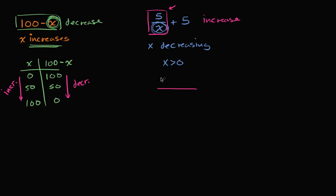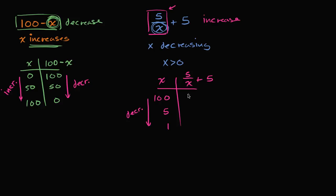We can make a little table to verify that. When x is 100: 5 divided by 100 is 0.05, plus 5 equals 5.05. When x is 5: 5 divided by 5 is 1, plus 5 equals 6. When x is 1: 5 divided by 1 is 5, plus 5 equals 10. So notice, when x is staying positive but decreasing, the whole expression 5 over x plus 5 is increasing.